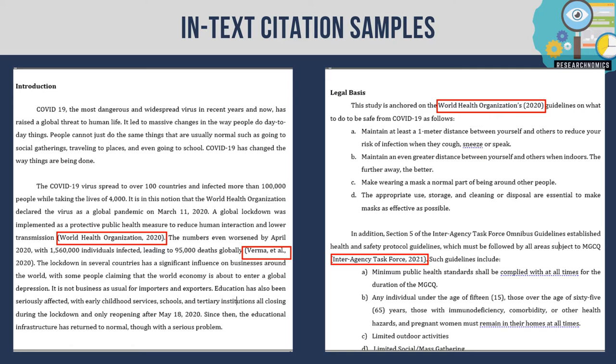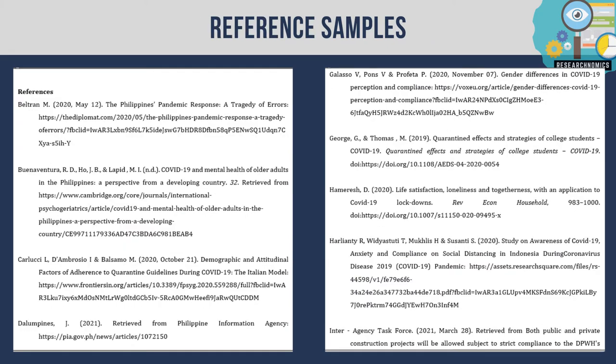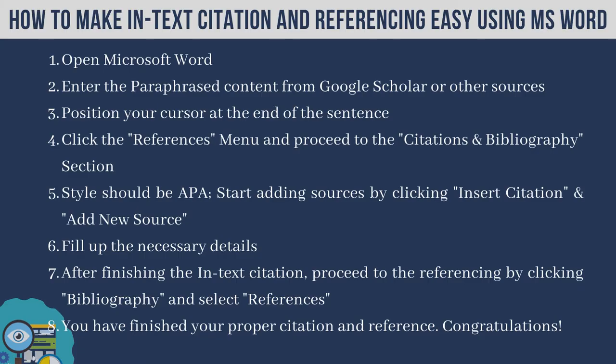Here are some examples of in-text citations and references. To make in-text citations and referencing easy using Microsoft Word: first, open Microsoft Word. Enter the paraphrased content from Google Scholar or other sources. Then position your cursor at the end of the sentence. Click the references menu and proceed to citations and bibliography. Style should be APA. Start adding sources by clicking insert citation and add new source, then fill up the necessary details. After finishing the in-text citation, proceed to referencing by clicking bibliography and select references.